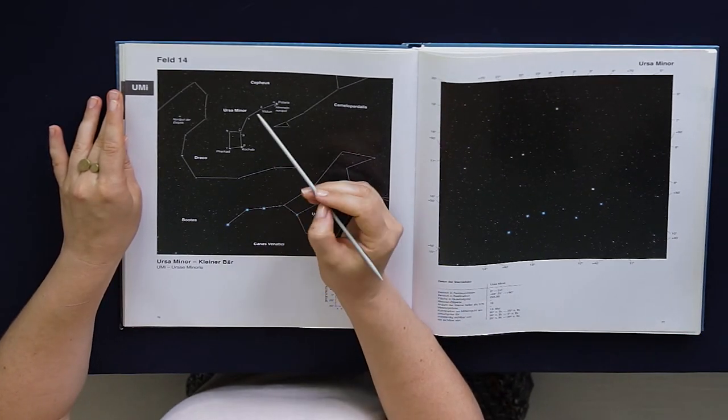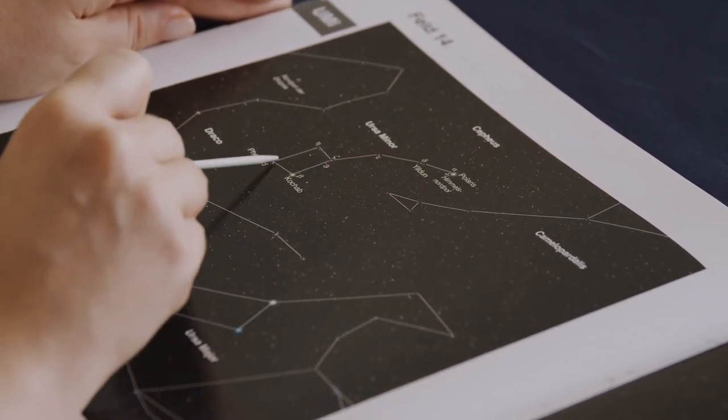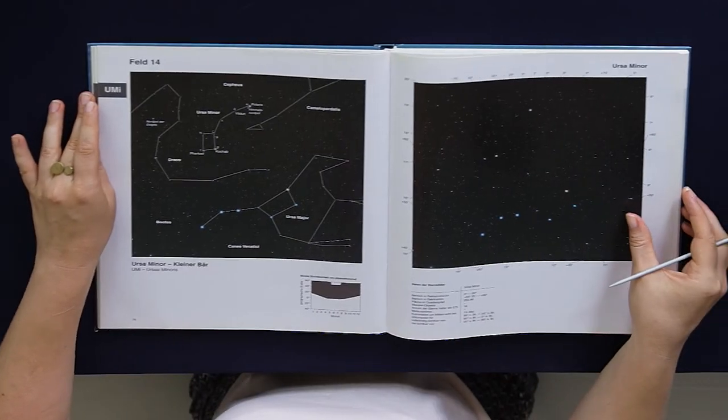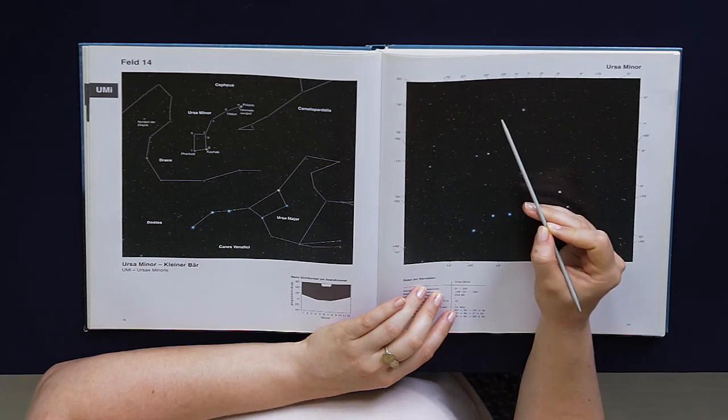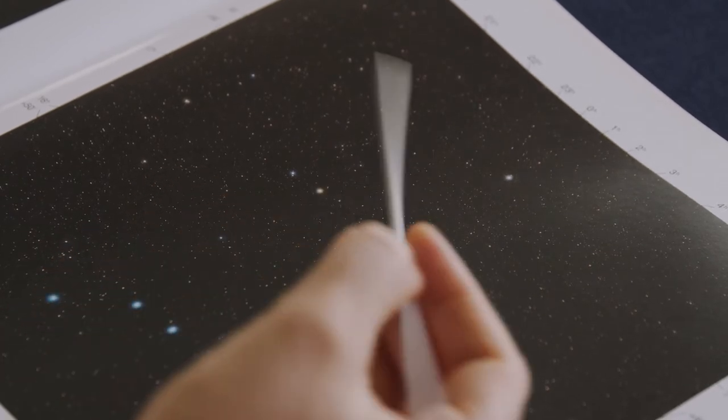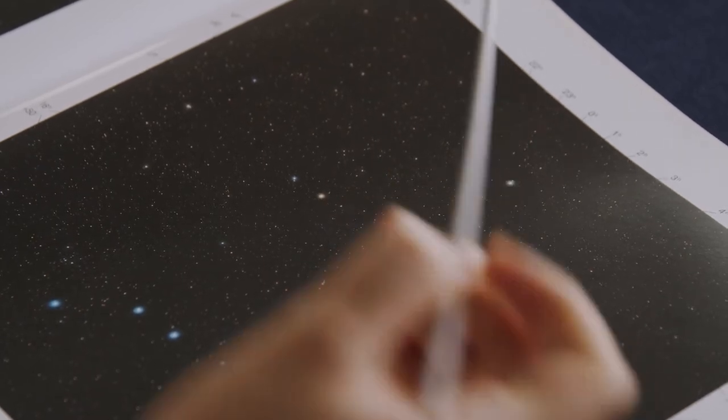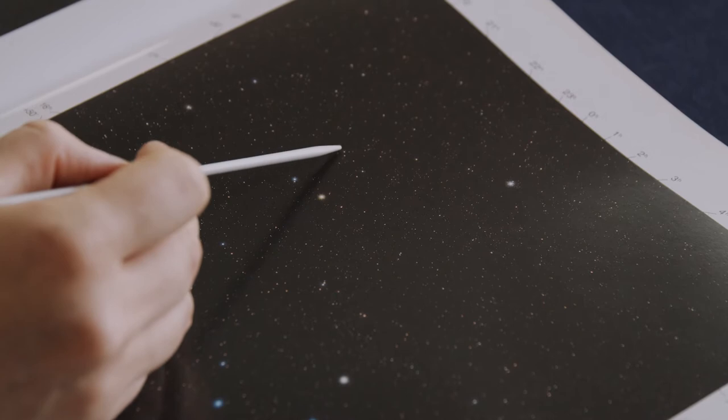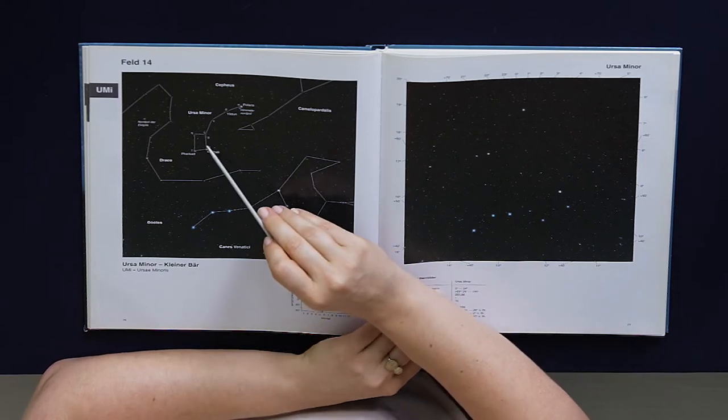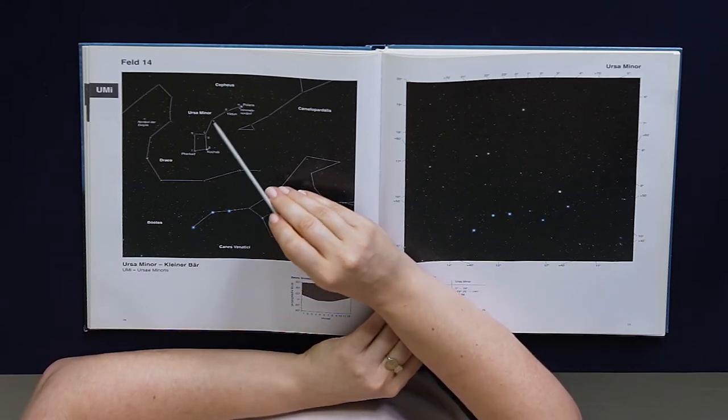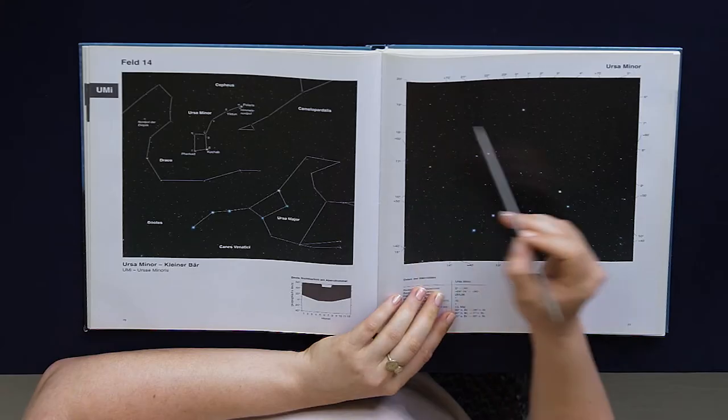Down here, Kochab and Pherkad, like this. So from Polaris down here, here, here, and then these aren't very bright - I think it's this one here down to Kochab, Pherkad, and upwards. And as you can see, it looks a little bit like the Big Dipper, just this part here is bent in the other direction.